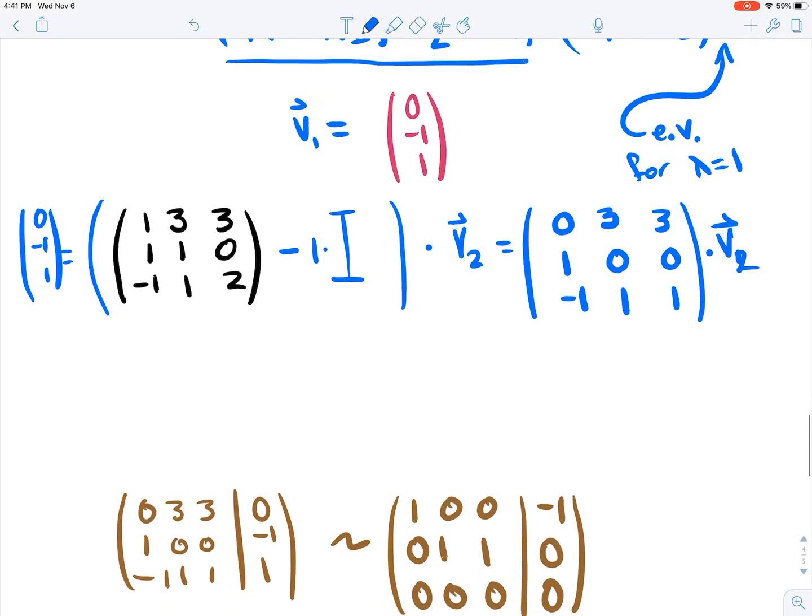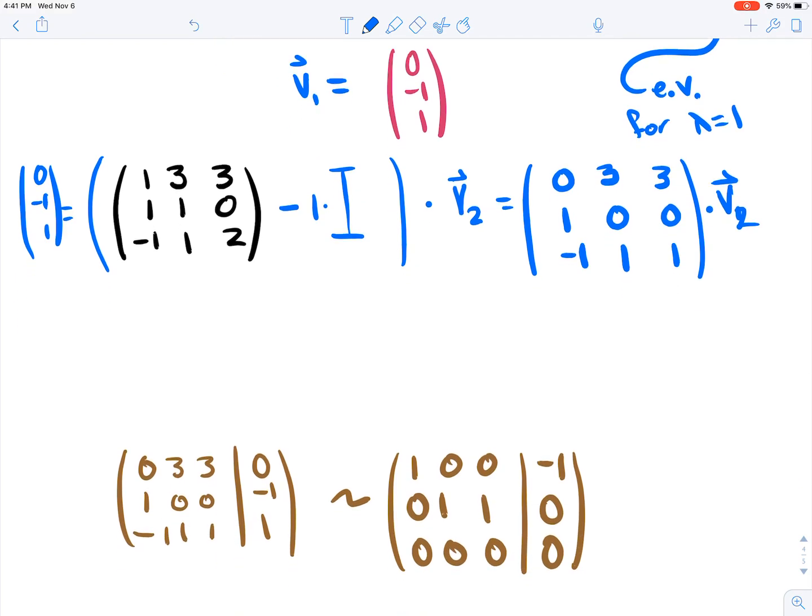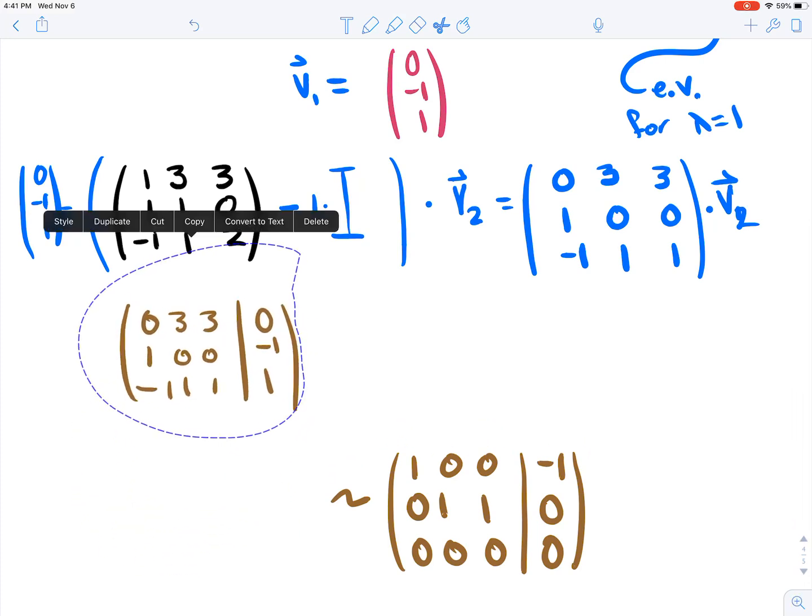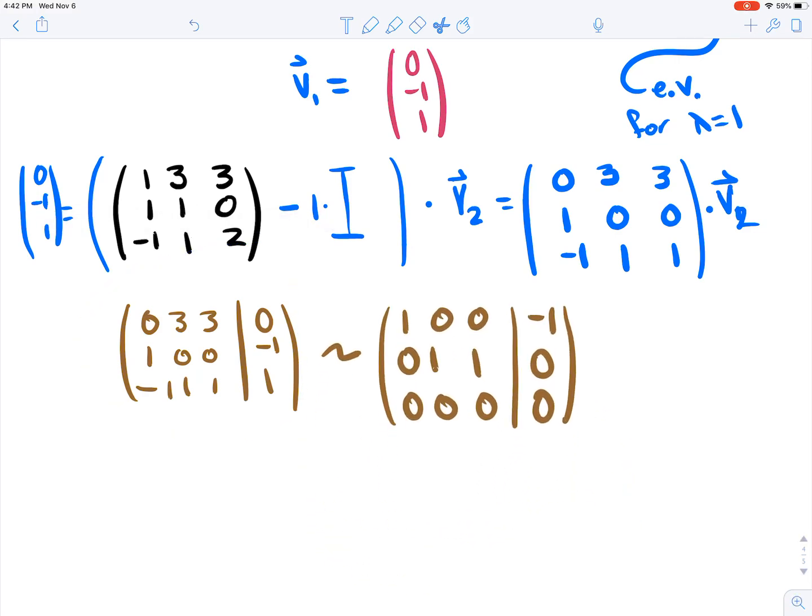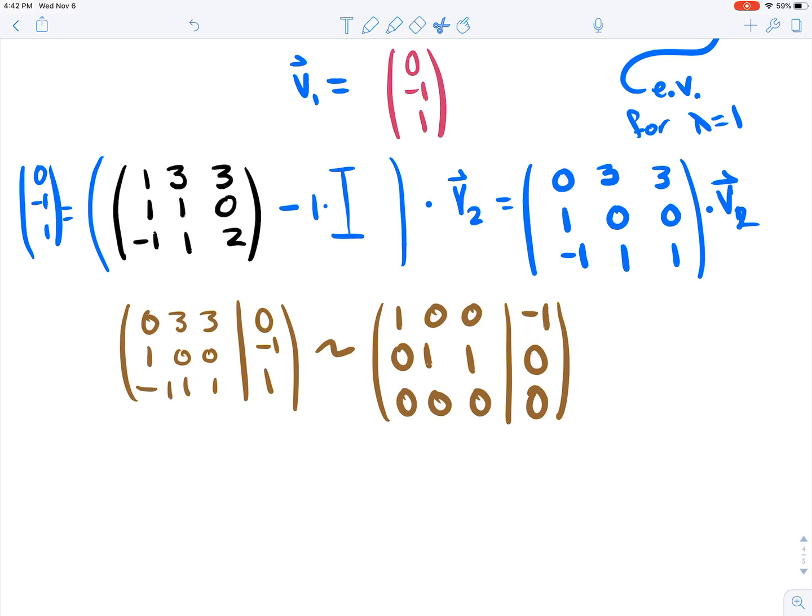So let's go ahead and solve this. To solve this, what we do here is we want to set up this augmented matrix here. I've already set it up for you. So then you do your row operations. And we have here the reduced form. This is what you're going to be getting.